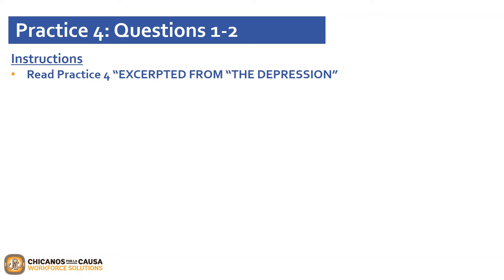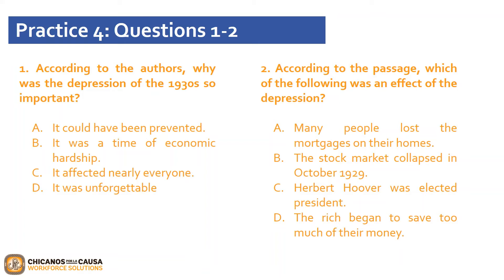Please pause the video and read Practice 4, excerpted from The Depression, found on page 67. Our first question: according to the authors, why was the depression of the 1930s so important? A, it could have been prevented; B, it was a time of economic hardship; C, it affected nearly everyone; or D, it was unforgettable. Given the large impact of the depression, the correct answer is C — it affected nearly everyone. This answer summarizes the meaning of the first two sentences of the passage. Our second question: according to the passage, which of the following was an effect of the depression? A, many people lost the mortgages on their homes; B, the stock market collapsed in October 1929; C, Herbert Hoover was elected president; or D, the rich began to save too much of their money. The correct answer is A — many people lost the mortgages on their homes, as stated in the first paragraph. While B and D are both mentioned as causes, not effects, of the depression.